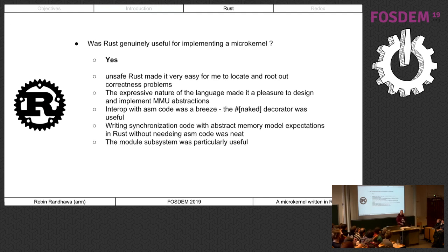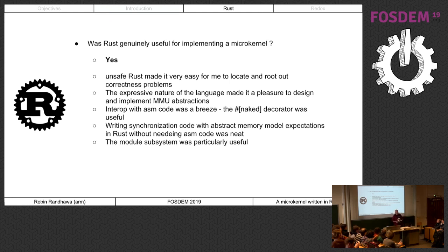For learning Rust: there's a really nice community book called The Rust Book, available in print and online. I read it, then read it again. Rust by Example is great for solving specific problems. The Rustonomicon provides detail on unsafe internals. There's the Rust Reference. Notably, there isn't yet a formal language specification, but a working group is being created to attack that problem. Was Rust genuinely useful for implementing a microkernel? Yes. I particularly liked the benefit of unsafe - it helped me localize the tricky bits. The expressiveness made complex system software concepts easier. Interop with assembly was a breeze, and synchronization code was easy due to the memory model.